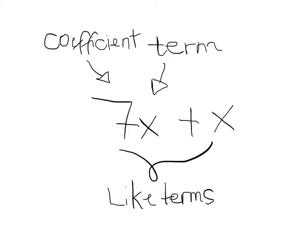This is a coefficient, a number that is multiplied by a variable. As you can see, both of these are called like terms. Like terms are terms with the same variable raised to the same power. Coefficients do not have to be the same.